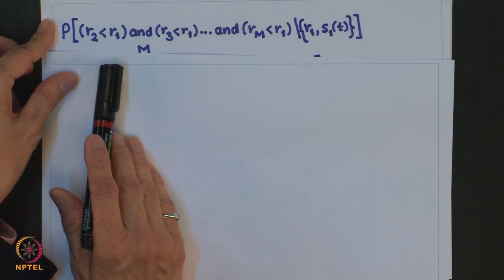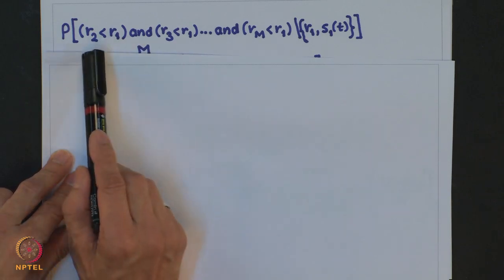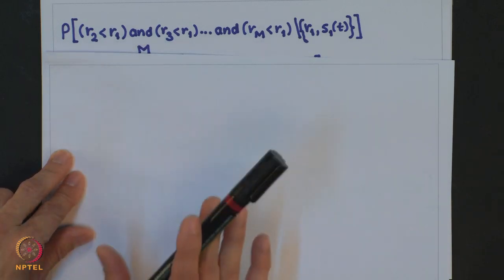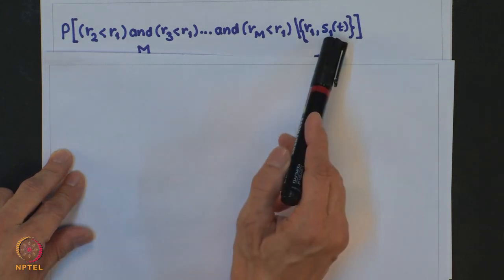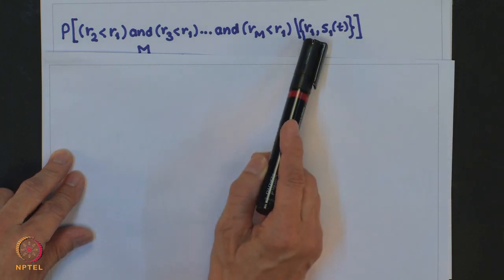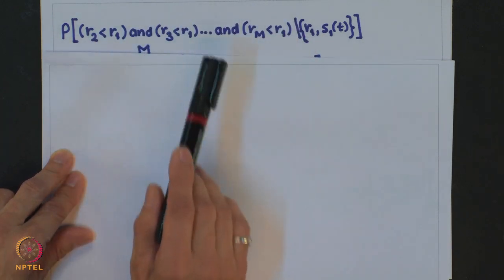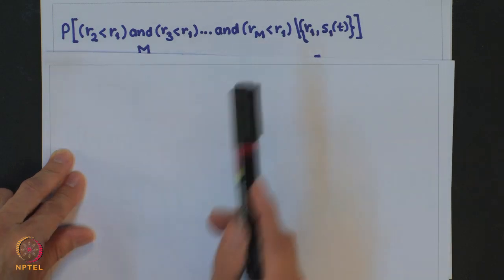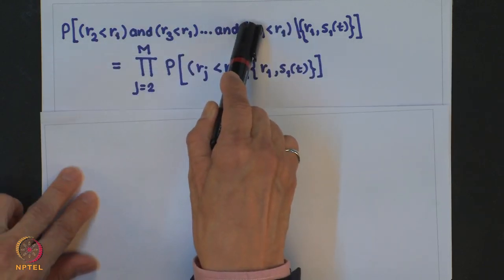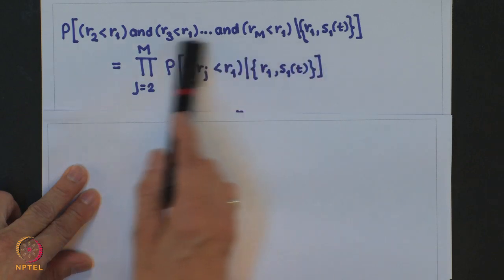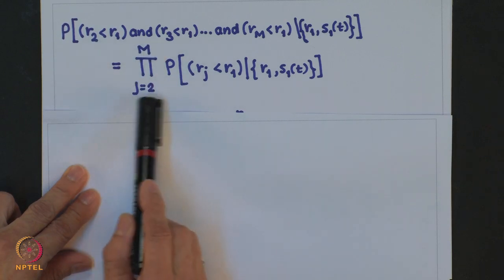This joint probability is simple to evaluate: R_2, R_3, ..., R_m all have projections due only to noise — the signal contribution is only to component R_1. Since R_i's are uncorrelated and Gaussian, hence independent, the joint probability is the product of individual conditional probabilities for j = 2 to M.